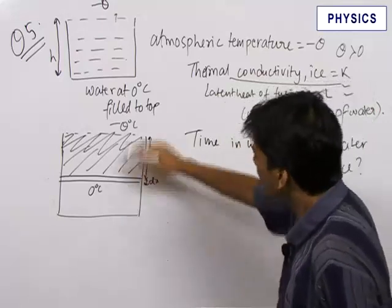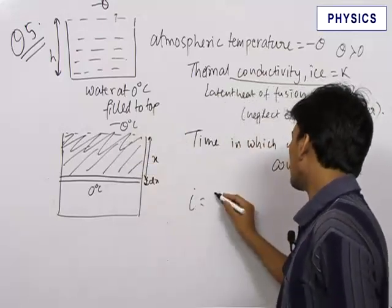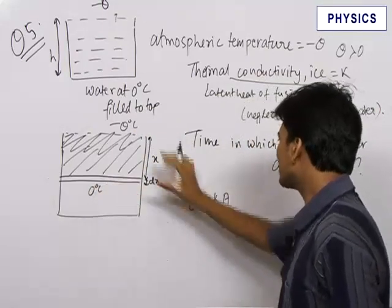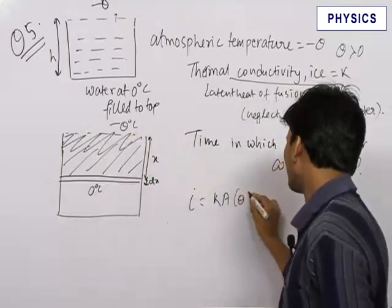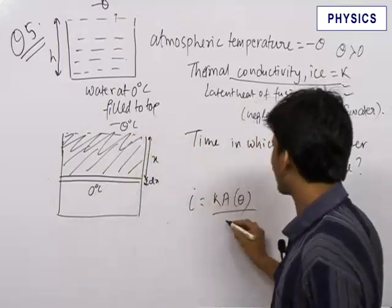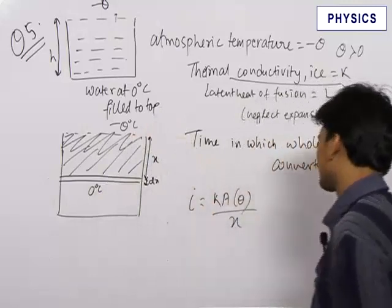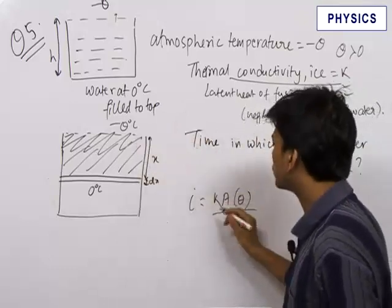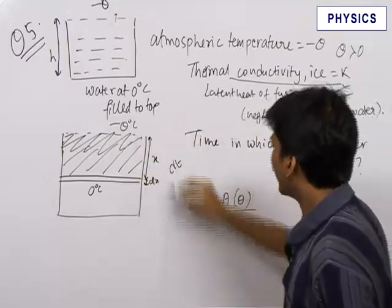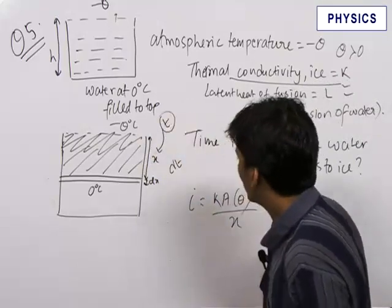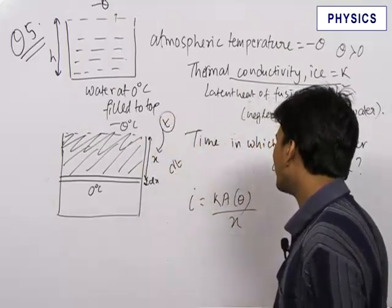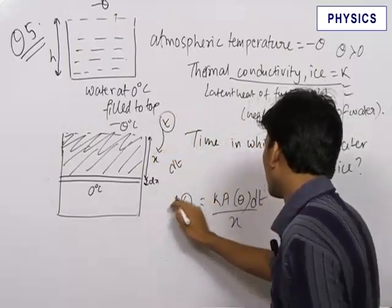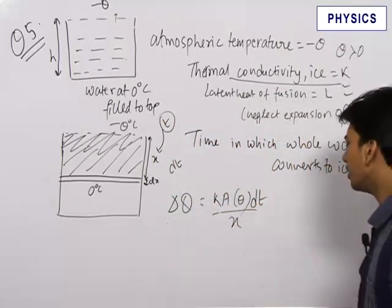Let us find the heat current first. The heat current is equal to k times the area of cross-section times the temperature difference across the two ends — that is theta — divided by the length of ice, which is x. To find the small amount of heat transferred due to this heat current in a small time dt, assuming this occurs after time t, the amount of heat transferred will be equal to k·theta·A·dt divided by x.